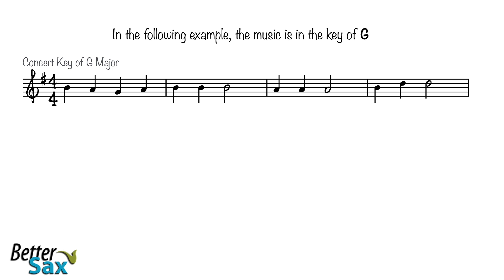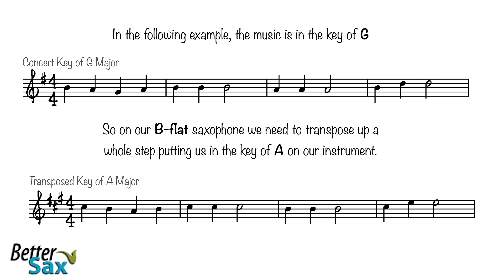In the following example, the music is in the key of G. So on our B flat saxophone, we need to transpose up a whole step, putting us in the key of A on our instrument.